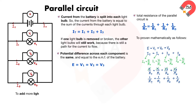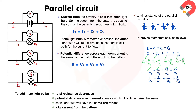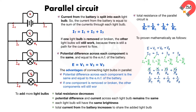Therefore, when more light bulbs are added in parallel to a circuit, the total resistance decreases. However, the potential difference across each light bulb remains the same and the current through each light bulb remains the same, meaning each light bulb will have the same brightness, even though the total current from the battery increases to supply the added light bulb. The advantages of connecting light bulbs in parallel are: the potential difference across each component equals the EMF of the battery, and if one light bulb is removed or broken, the others will still work.